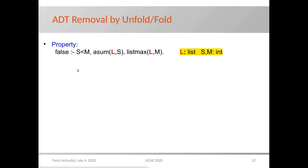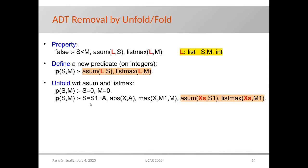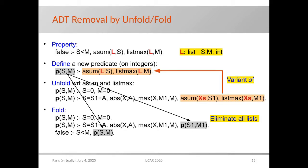We consider the clause that encodes the property to be verified and we define a new predicate P as the conjunction of the asum and listmax atoms that contain list variables. The arguments of P are the integer variables occurring in its defining body. Then we unfold with respect to both asum and listmax and we get two clauses. The first one has no lists and the body of the second one has a variant of the body of the clause defining P. Thus, by the fold rule, we replace that variant by the corresponding P atom and eliminate the list variable. We do the same for the clause that encodes the property.